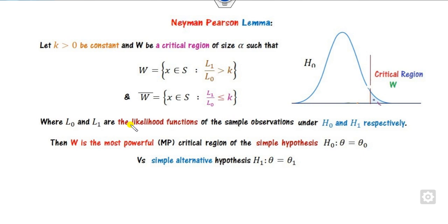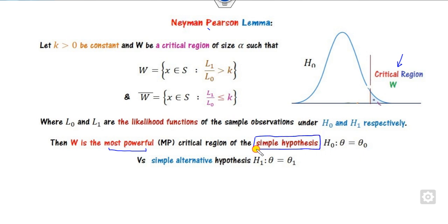The last lecture was on the Neyman-Pearson lemma. The principle of this lemma is: the target is to find the critical region W such that W will be the most powerful region. Whenever you are working on the Neyman-Pearson lemma, two things must be satisfied. The first thing is your hypothesis should be simple — whether it is H0 or H1, it must be simple.